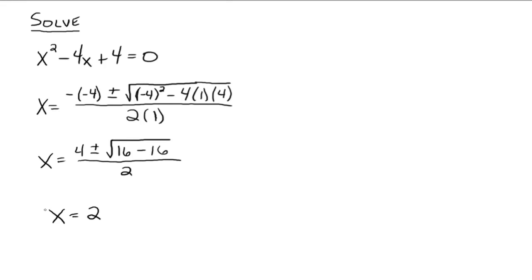16 minus 16 is 0, and the square root of 0 is 0, so we're just left with 4 over 2, which is 2. There's only one solution. You have 4 plus or minus 0, which is just 4, and 4 divided by 2 is 2.